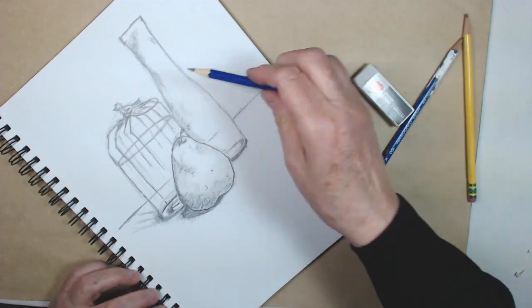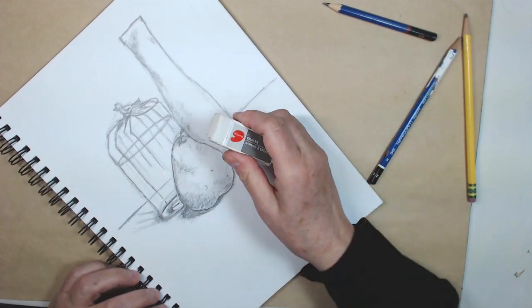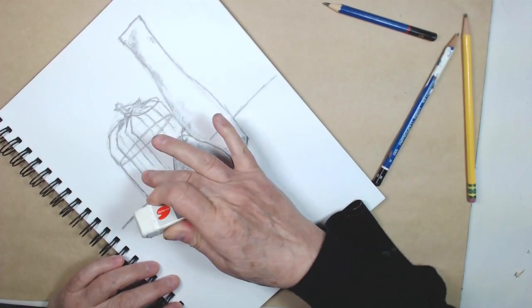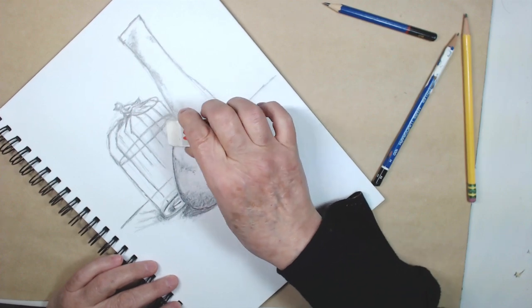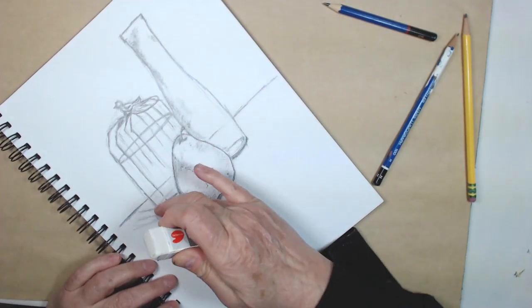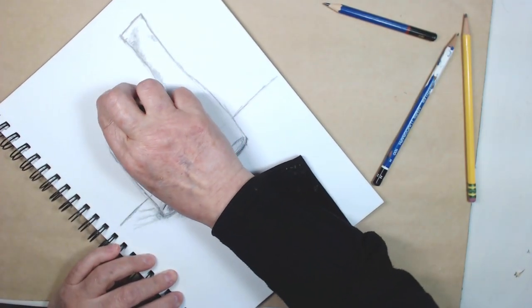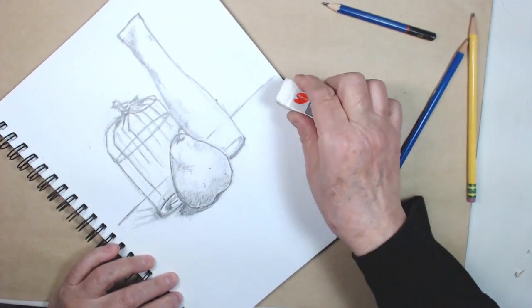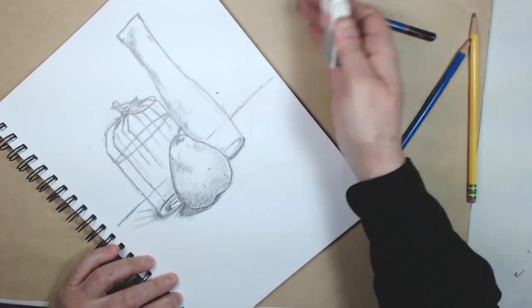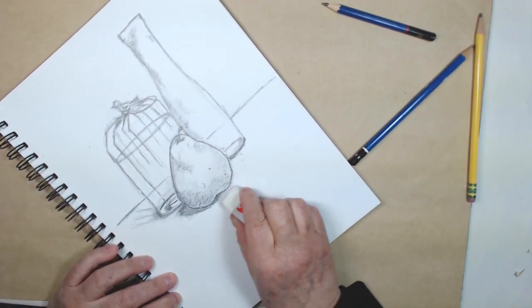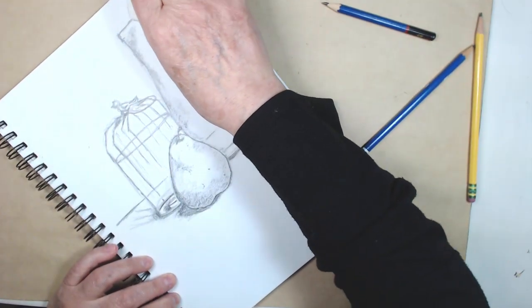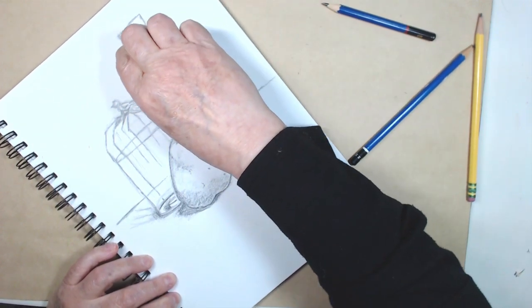Now is the time to bring out the eraser and just maybe neaten up the lines that I couldn't get rid of by shading over them or going over them and also neaten up some of the smudges that always happen especially when you're using a darker pencil that makes more dust.